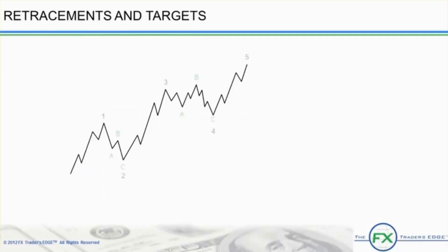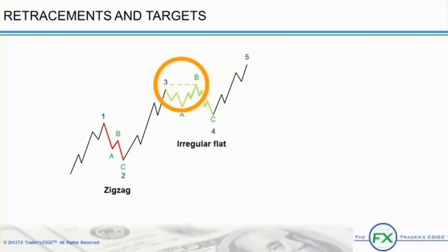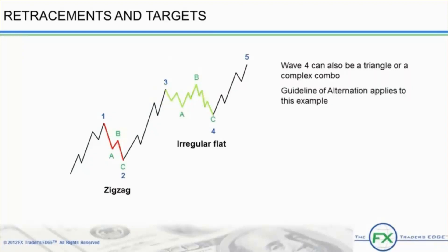Take a look at this five-wave sequence labeled 1, ABC, 2, 3, ABC, 4, and 5. We just learned all about corrections and the forms they may take. Here we have a wave 2 correction which is a zigzag, very typical of wave 2s. The wave 4 correction is very different as it takes the shape of an irregular flat where the B wave travels above the top of the previous impulse wave before making its way down in a C wave to complete the correction. Note the wave 4 correction can also be a triangle or one of the complex combos, such as double and triple threes combinations. The guideline of alternation also applies since wave 2 is a sharp, simple, zigzag correction and wave 4 is a sideways, irregular, flat correction.